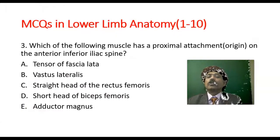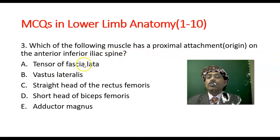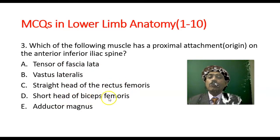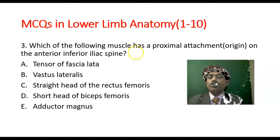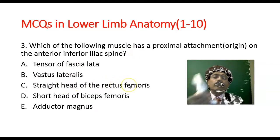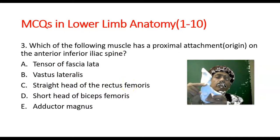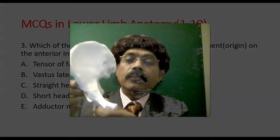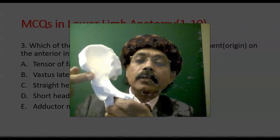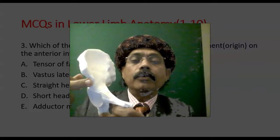Question number 3: Which of the following muscles has a proximal attachment — origin — on the anterior inferior iliac spine? Options: tensor fasciae latae, vastus lateralis, straight head of the rectus femoris, short head of biceps femoris, adductor magnus. From the anterior inferior iliac spine, that is the straight head of the rectus femoris. We have the reflected head over the rim of the acetabulum, and this is the straight head of the rectus femoris muscle.